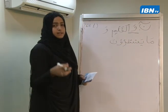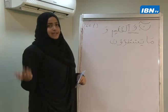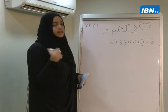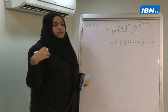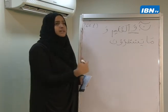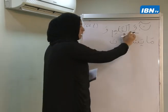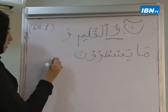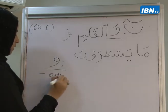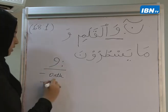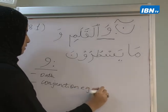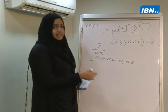The وَا here can be used in three ways. First, it can be used to take an oath. Second, it can be used as a conjunction meaning 'and.' And lastly, it is also translated as 'by.' Allah uses it to take an oath of things that are more significant — to make something certain.